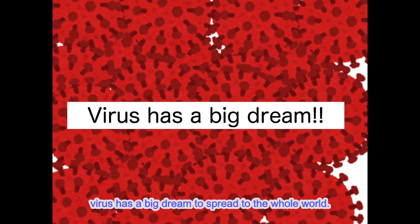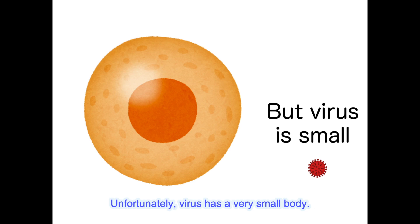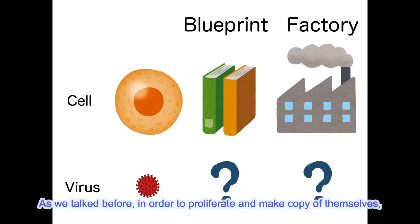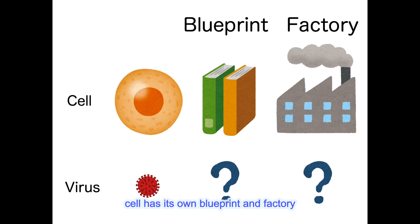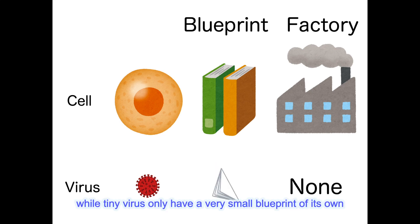Virus has a big dream to spread to the whole world. Unfortunately, virus has a very small body. As we talked before, in order to proliferate and make copies of the cells, the cell has its own blueprint and factory. While tiny virus only has a very small blueprint of its own, and no factory to make up parts for proliferation.